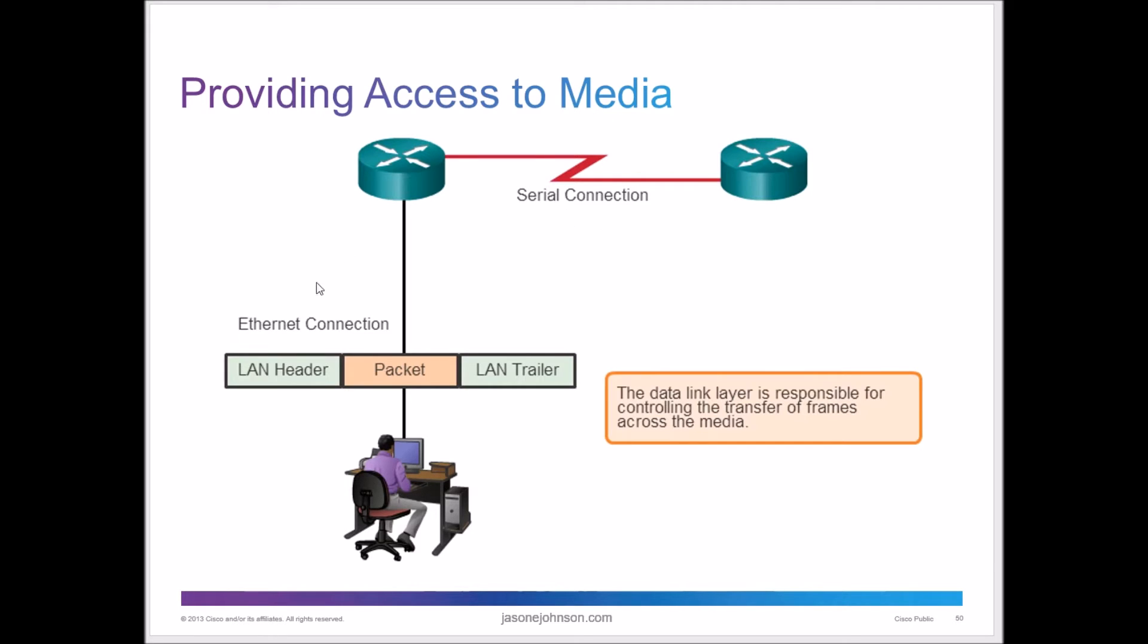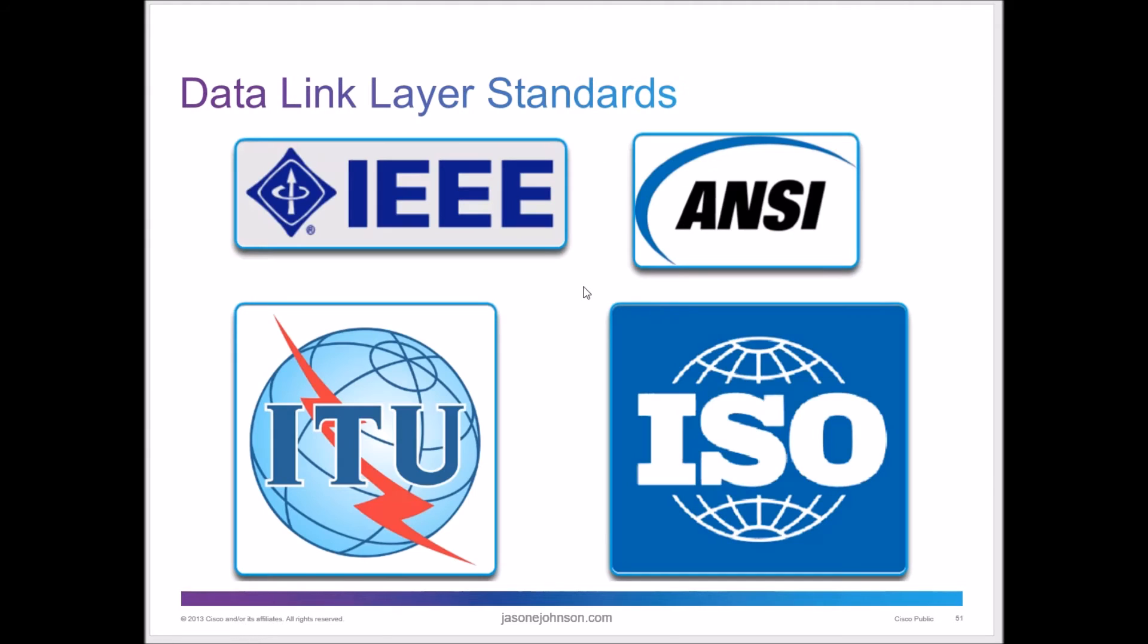So it also provides access to media. Whether we're using a serial connector or an Ethernet connection, the data link layer is responsible for controlling the transfer of frames across the media. It's to say, how are we being transferred? What's the medium? And how is it going to talk to each other? The standards are set by these governing bodies here, ISO, IEEE, ANSI, and ITU. And you can look those up if you want to just Google those.